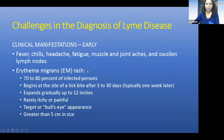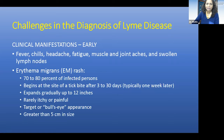Erythema migrans is considered pathognomonic for Lyme disease. However, not everybody who has Lyme disease will have an erythema migrans rash or a rash at all. It's typically described as a target or bullseye lesion, but sometimes the rashes don't look that way. They're usually not itchy or painful. If the lesion is less than 5 centimeters in size, it's not going to be related to Lyme disease — almost all Lyme rashes are greater than 5 centimeters.